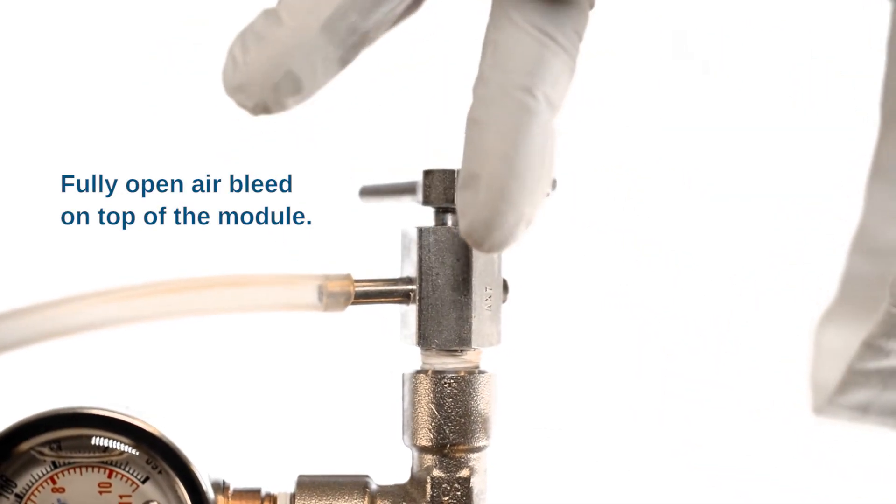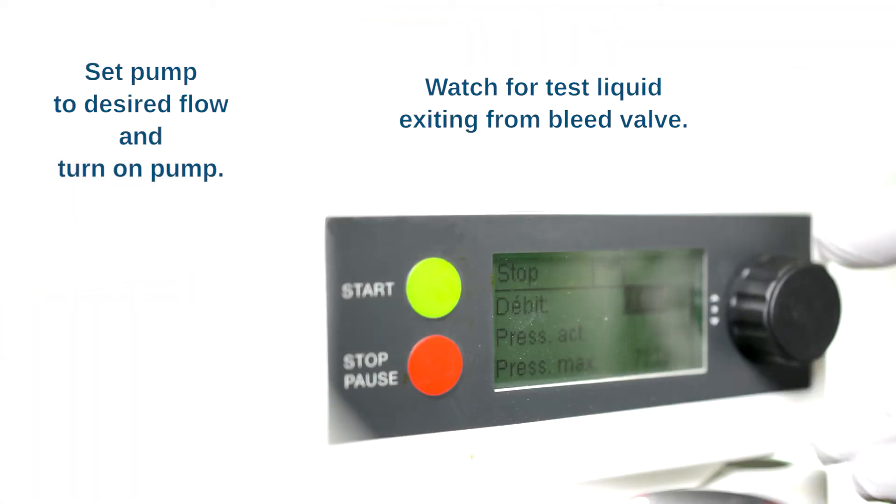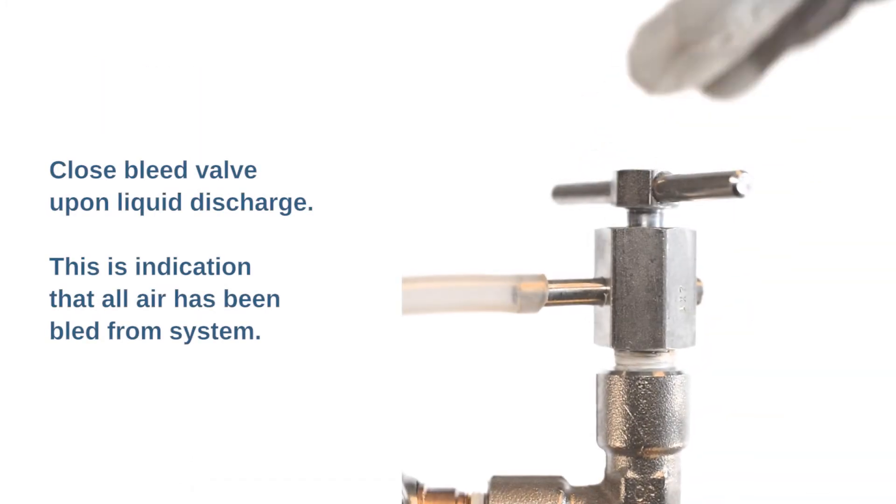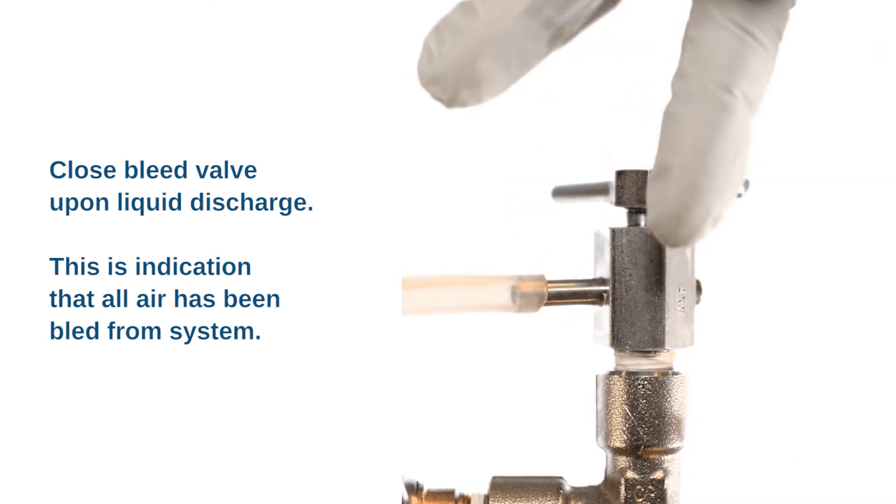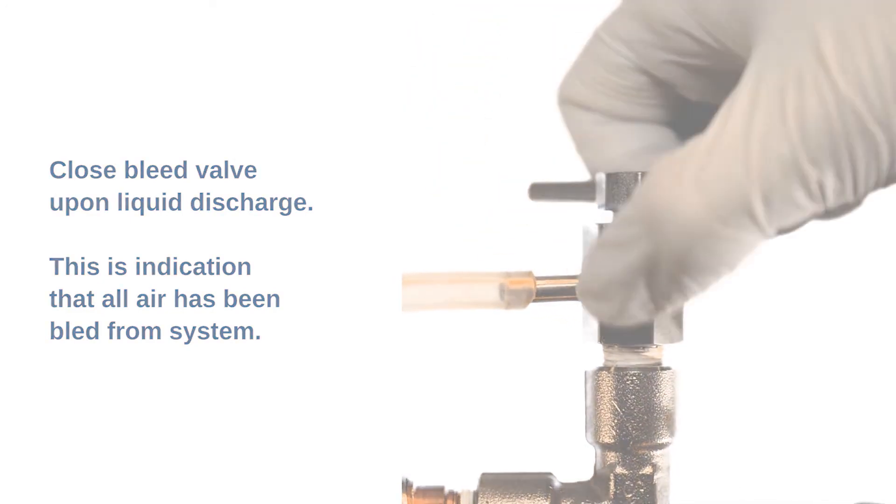Fully open air bleed on top of the module. Set pump to desired flow and turn on pump. Watch for test liquid exiting from bleed valve. Close bleed valve upon liquid discharge. This is indication that all air has been bled from system.